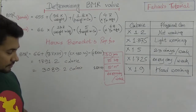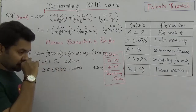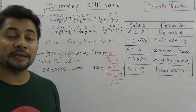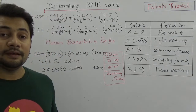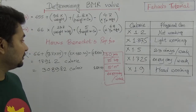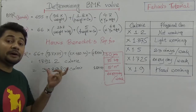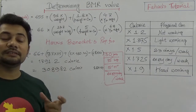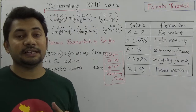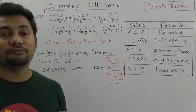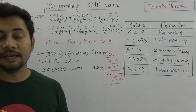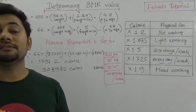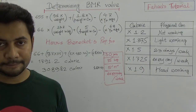So if this person wants to be healthy, then this person needs at least 3100 calories of food per day for 24 hours. And that is the calculation of the Harris-Benedict Formula.